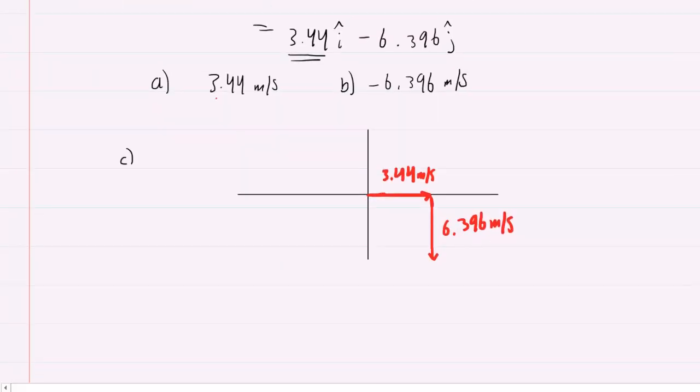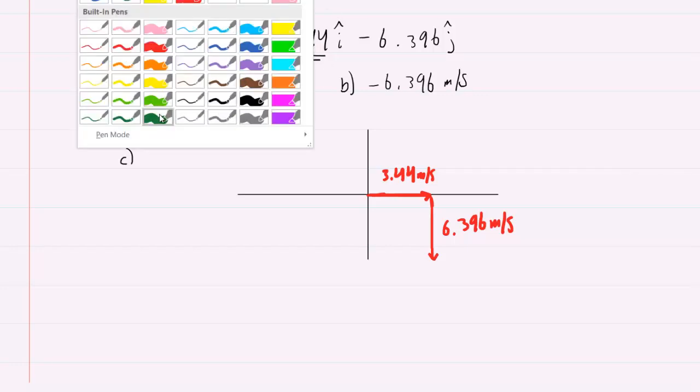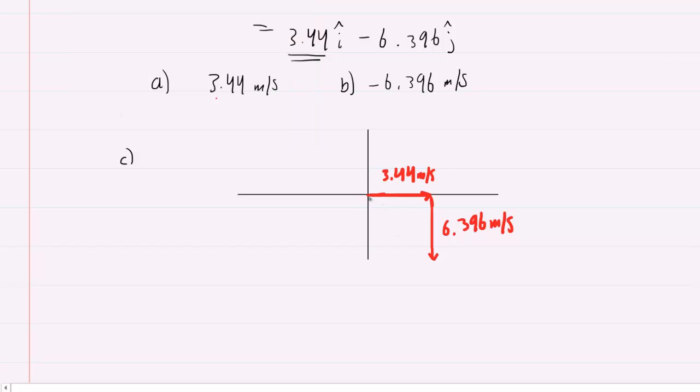So again, in part c, we want the magnitude of the velocity, of the resultant velocity really. We can find that by drawing a vector from the origin to the tip of our y component, and we can perhaps just label this the v for velocity. So we just use Pythagorean theorem now to solve for v.